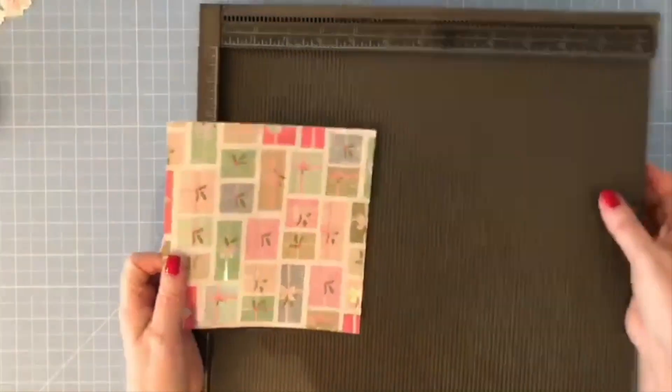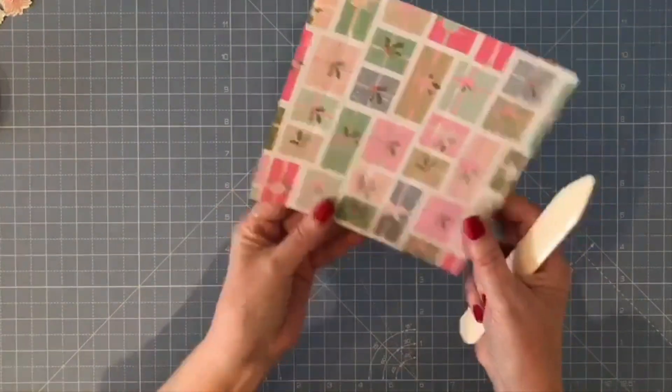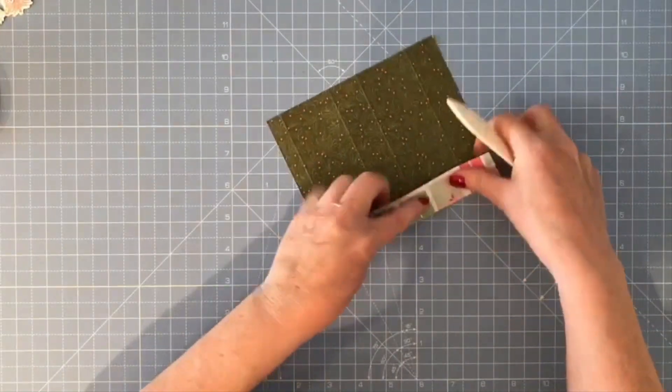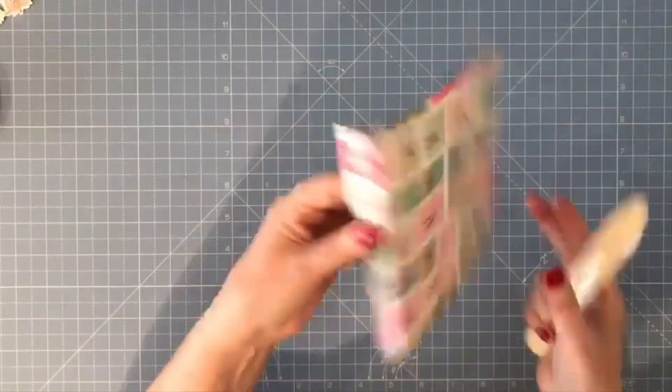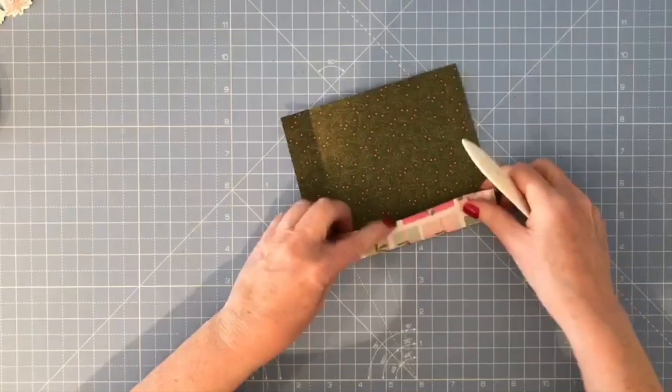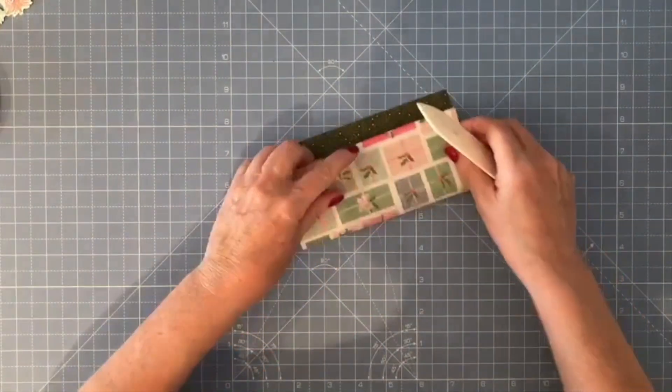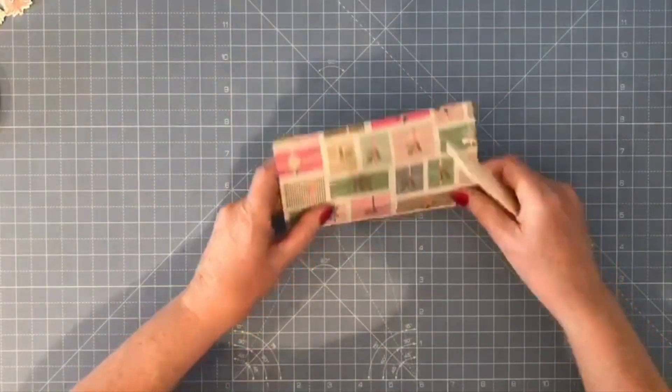That's all there is to it. I'm going to bring in my bone folder and start to burnish on all these score lines. So that's the one inch at the bottom, and these are now the vertical score lines.